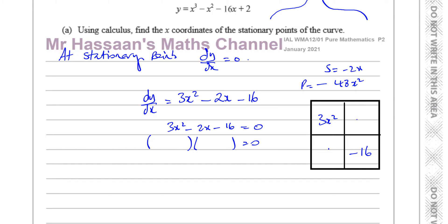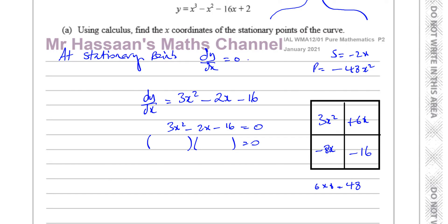So these two numbers must multiply to give minus 48x squared and have a sum of minus 2x, meaning the difference between them is 2. Thinking of ways to get 48: 6 times 8 is 48, so the two numbers are 6 and 8 — with 8 negative. So we have minus 8x and plus 6x. Those multiply to give minus 48x squared and add to give minus 2x. Taking the common factor of 3x squared and 6x, which is 3x, we get the factors 3x minus 8 and x plus 2.